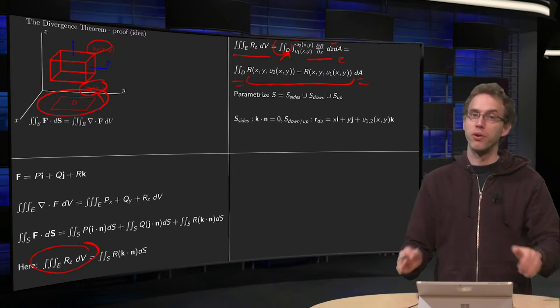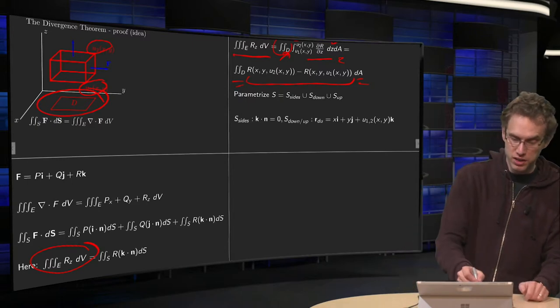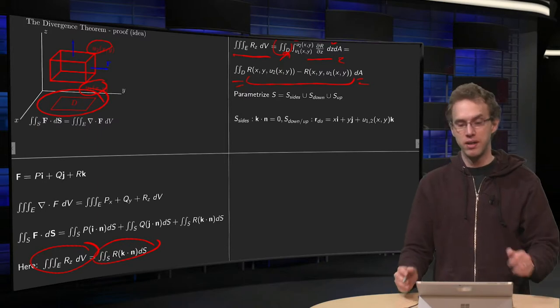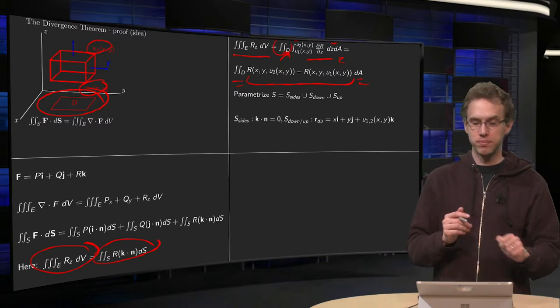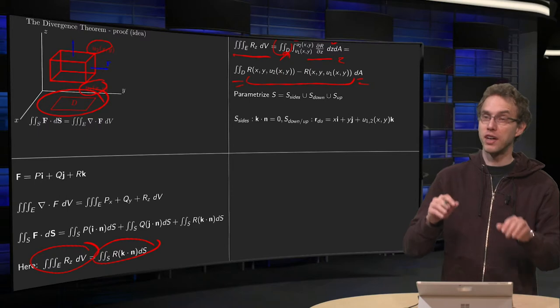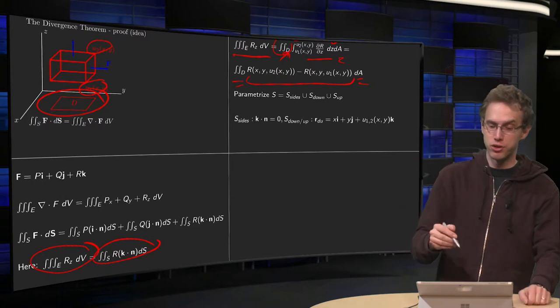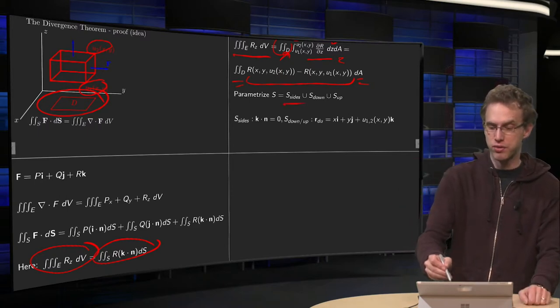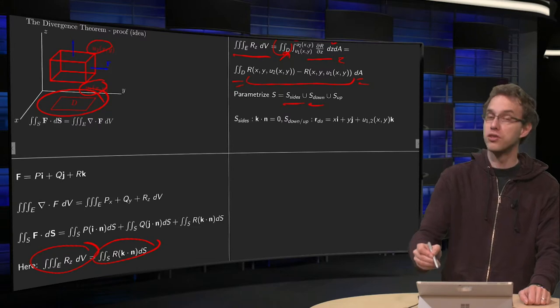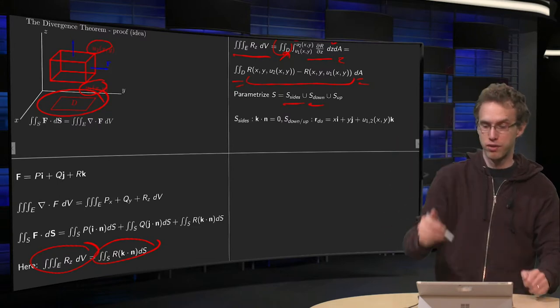So we will rewrite now this right-hand side over here in the same way. How are we going to do that? We have to parameterize all six sides of our solid, say the surface of the sides, with the surface down and surface up.